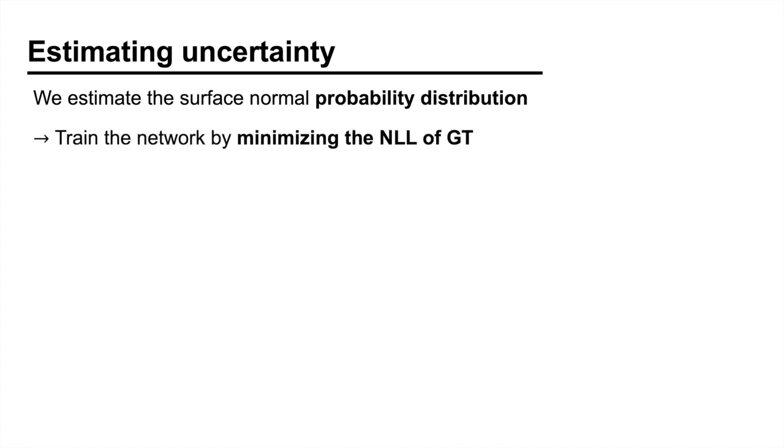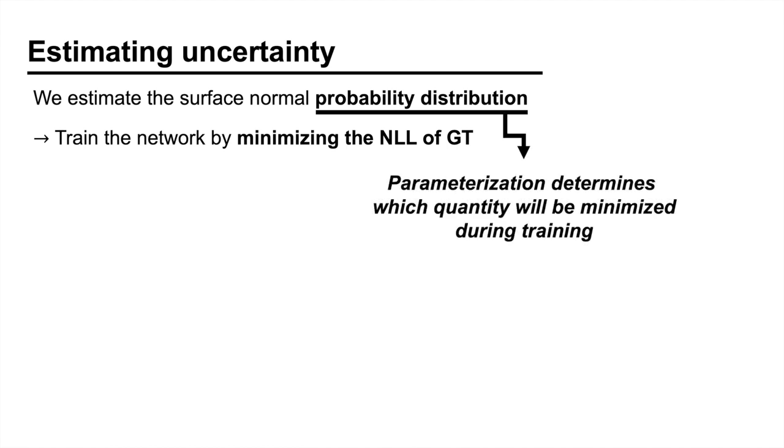Our first goal was to estimate the aleatoric uncertainty. In order to quantify the pixel-wise aleatoric uncertainty, we estimate the surface normal probability distribution and train the network by minimizing the negative log likelihood of the ground truth. When doing so, it is important to use a suitable parameterization for the distribution as it determines which quantity will be minimized during training.